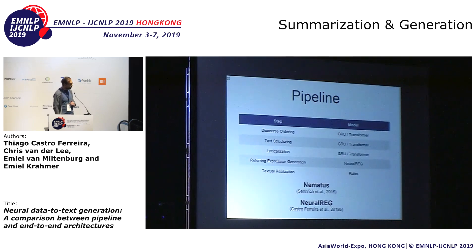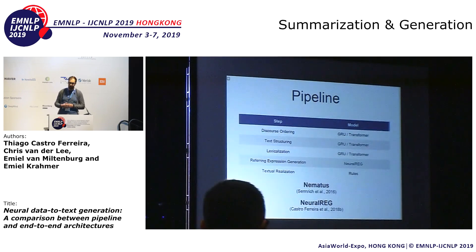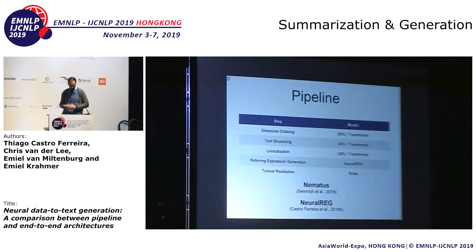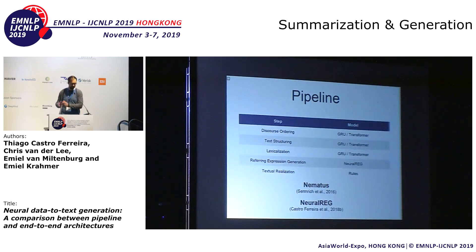I'm going to go through the neural pipeline we used first. We created a pipeline that consists of five steps. The first three steps — discourse ordering, text structuring, and lexicalization — are done using gated recurrent units or a transformer using Nematus, which is a state-of-the-art machine translation system. The fourth step is done by Neural Rack, which was built by Tiago and presented last year at ACL. It uses a bidirectional LSTM. Textual realization is done using rules with a parallel corpus.